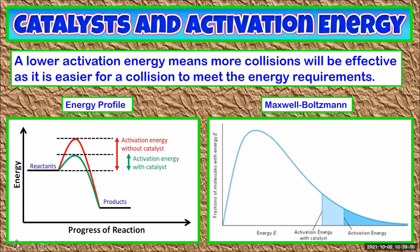You can show this on a Maxwell-Boltzmann distribution by drawing the activation energy line at a lower energy. You can see that if the activation energy is lower, a larger proportion of particles have enough energy for effective collision. The way we say this is: a greater proportion of collisions will be between particles whose sum of kinetic energy is greater than or equal to the activation energy of the reaction.